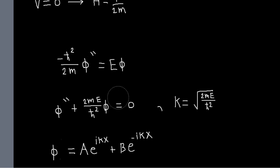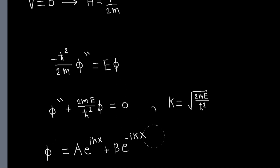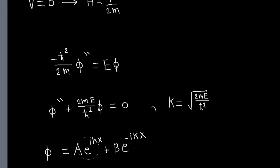Something different happens here: we don't have any boundary conditions we can apply to simplify things. Even the usual condition that the wave function should vanish at minus infinity and plus infinity doesn't work, because both of these functions just oscillate — there's no way to make them decay. So these states aren't physically realizable, because there's no way to have a probabilistic interpretation of the wave function in this kind of state.